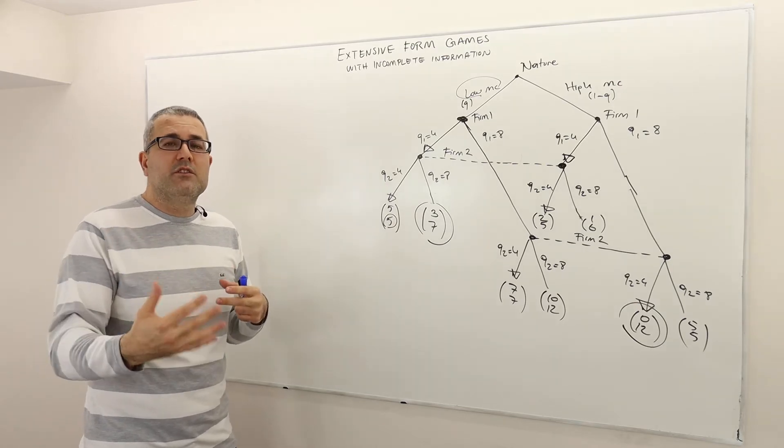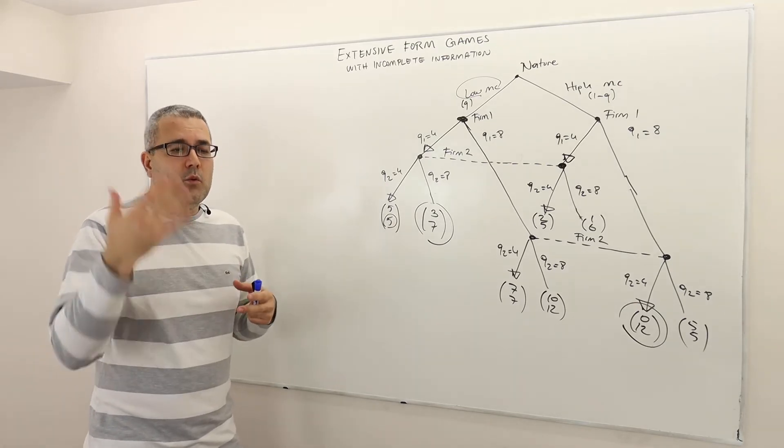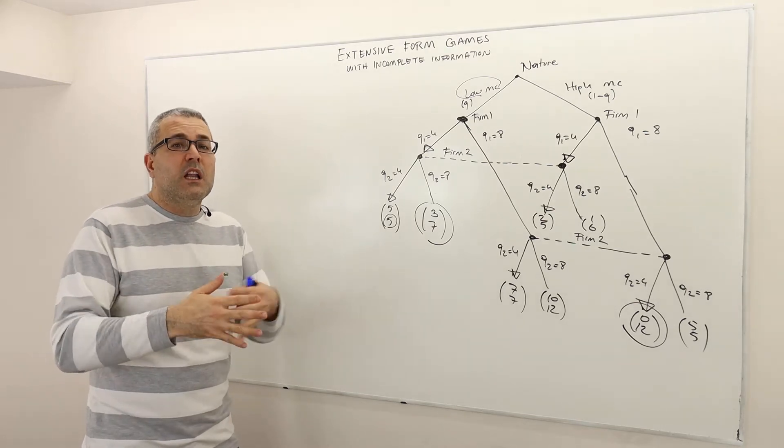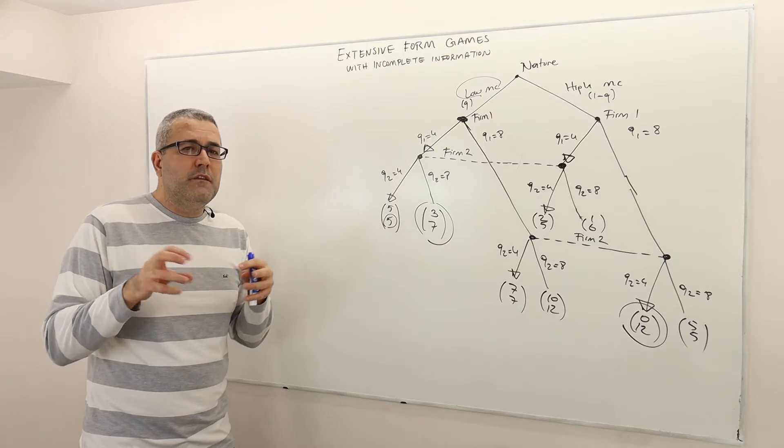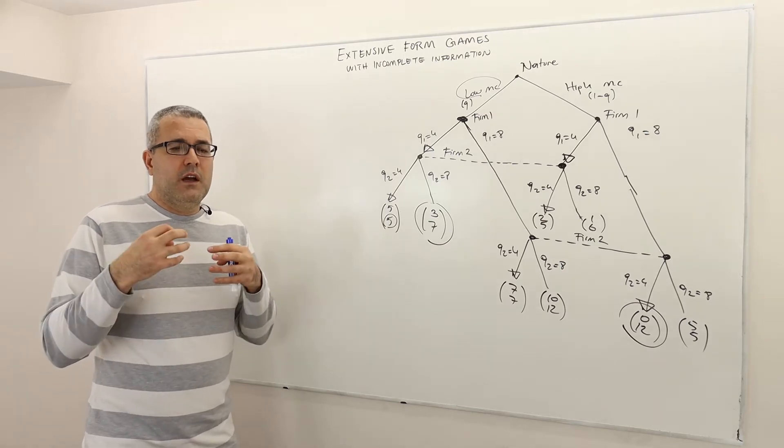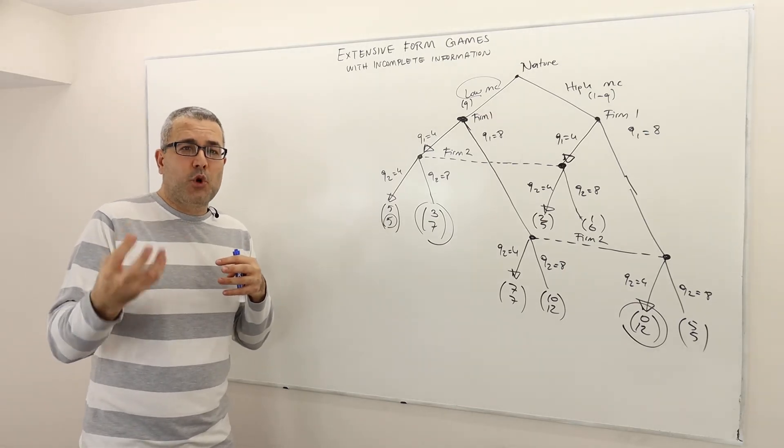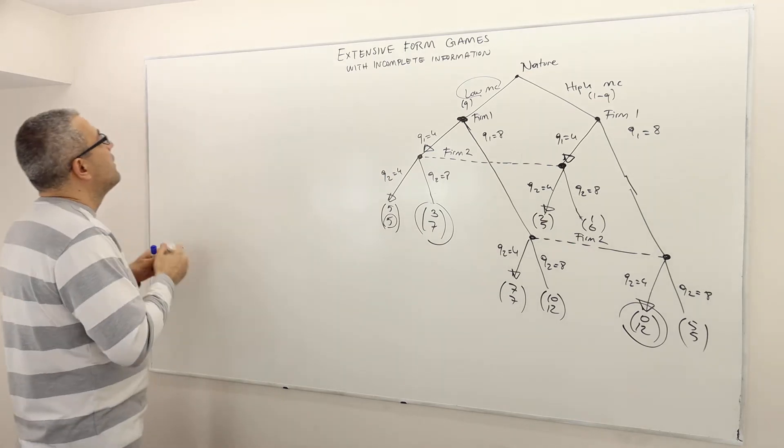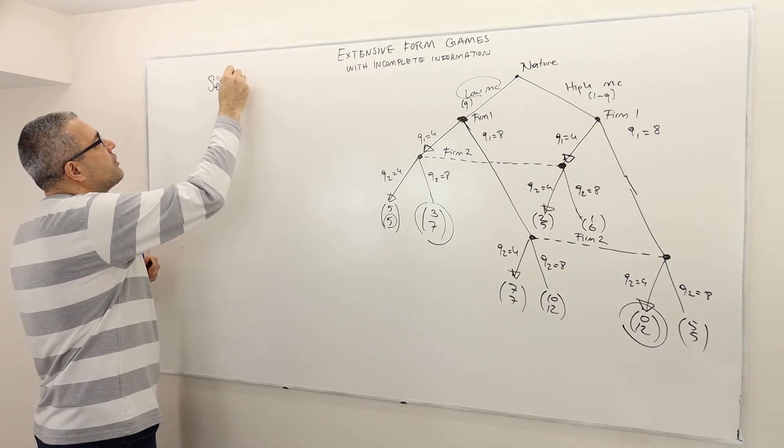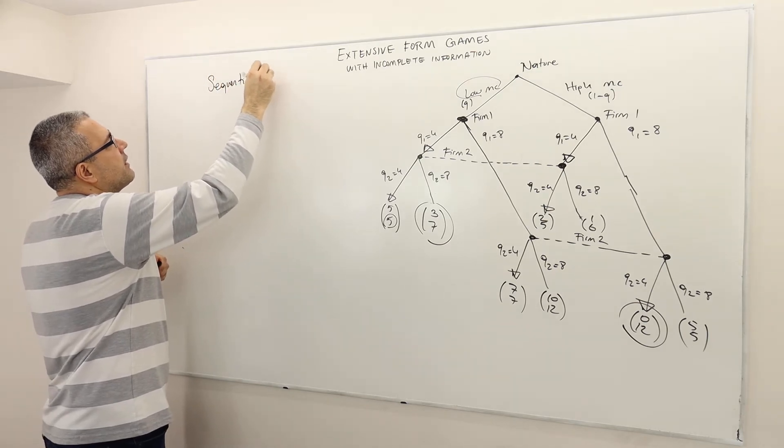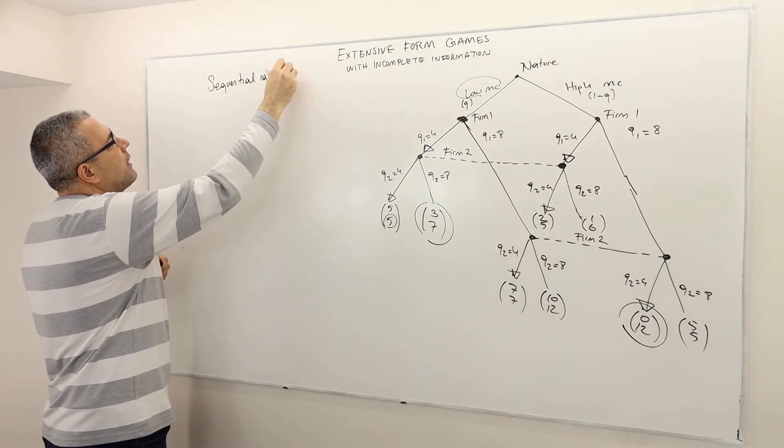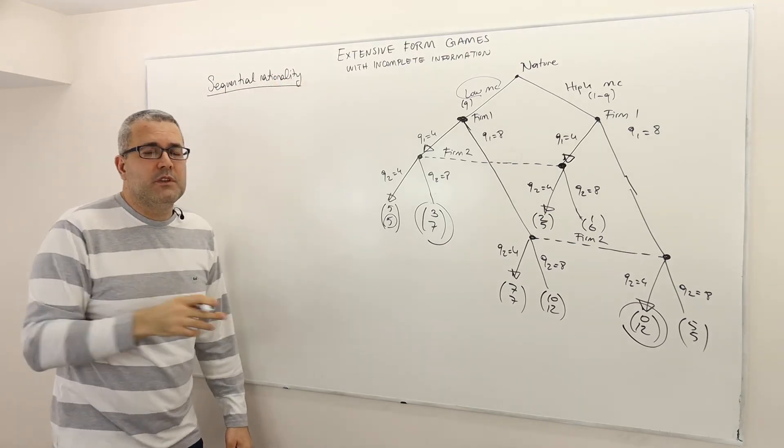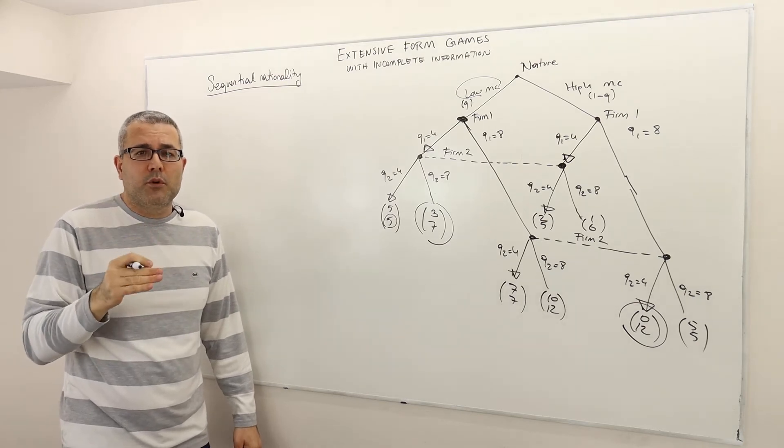Remember the idea of non-credible threats. When a game is extensive, there are a lot of Nash equilibria and only very few of them satisfy a nice property that we learned, sequential rationality. Remember this term, sequential rationality. If you do not remember it, please go back to our lecture videos and review this concept because it's very, very important.